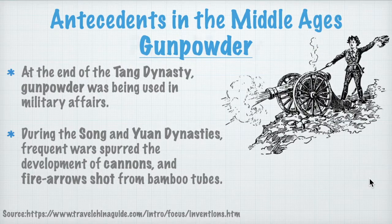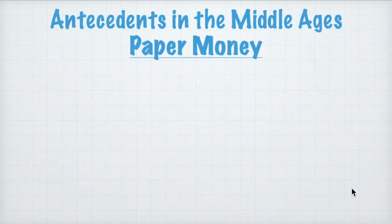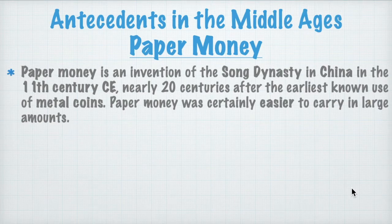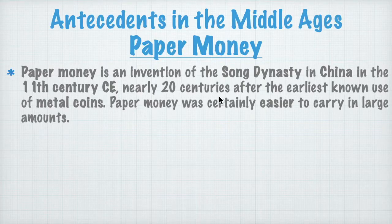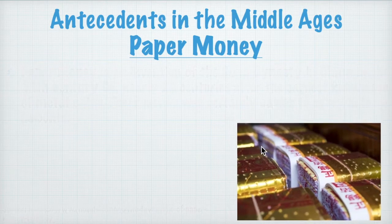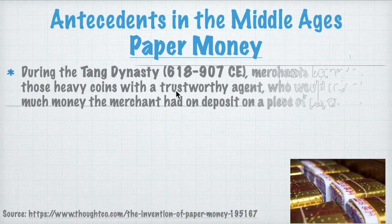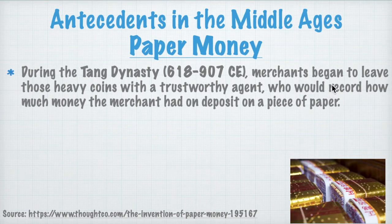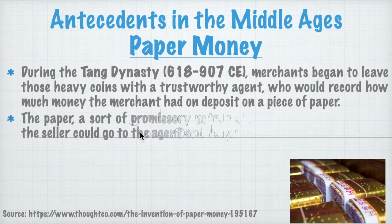The next antecedent is paper money, which also originated in China, specifically in the Song dynasty in the 11th century CE — nearly 20 centuries after the earliest known metal coins. Paper money was certainly easier to carry in large amounts, as we know from our banknotes today. During the Tang dynasty (618–907 CE), merchants began leaving heavy coins with agents who would record how much money the merchant had on deposit on a piece of paper.